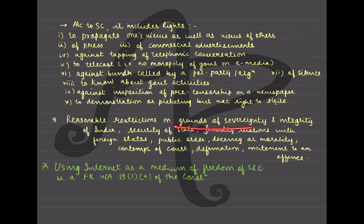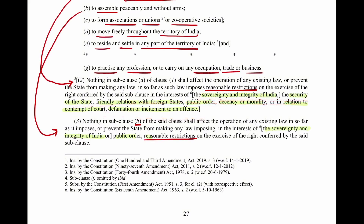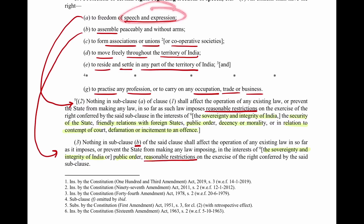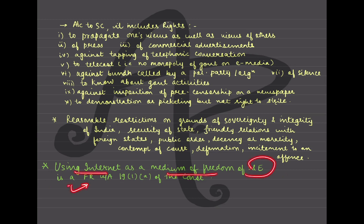The grounds for reasonable restrictions on speech and expression include sovereignty, integrity, etc. which are highlighted. Also important as a current affairs point from 2-3 years ago: using internet as a medium of freedom of speech and expression is also a fundamental right under Article 19(1)(a) of the constitution. This was in the news especially regarding internet shutdowns in places like Jammu & Kashmir.